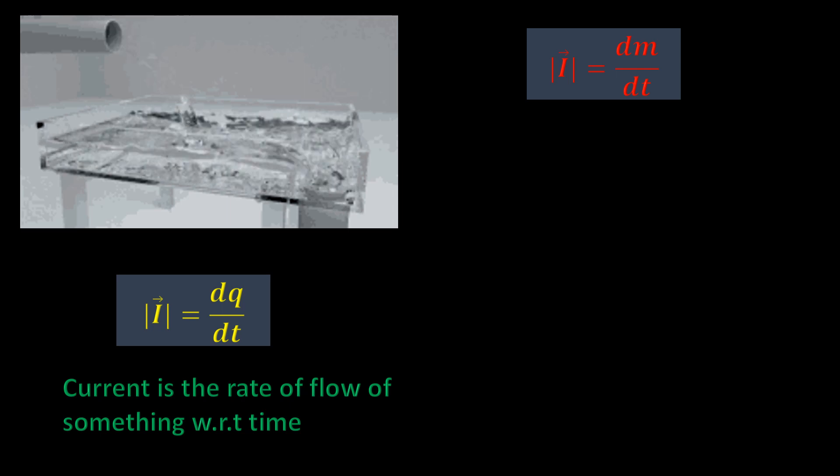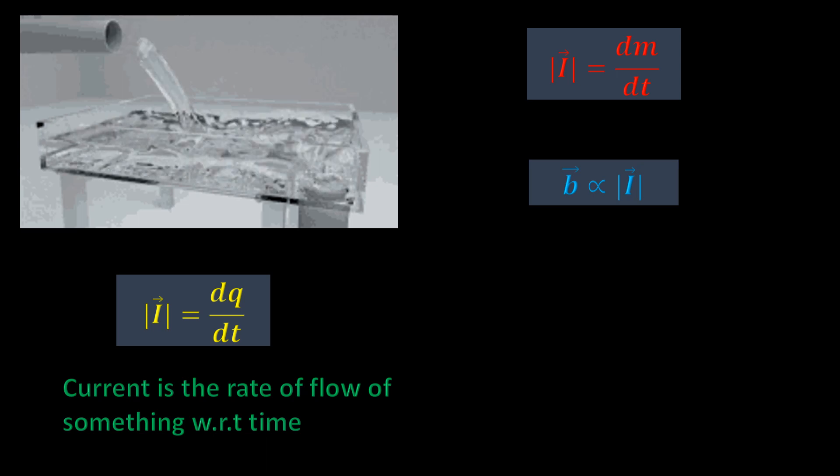Of course, a mass current is a set of moving masses, and moving masses, as we have seen, generate a gravitational magnetic field. The strength of this field must therefore be proportional to the magnitude of the current. So we can write b is directly proportional to I.